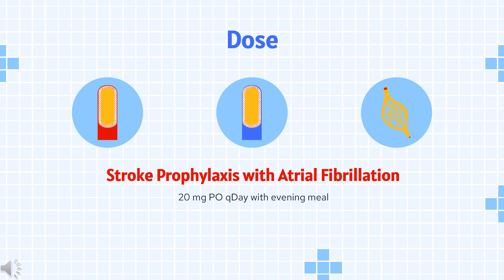Venous thromboembolism prophylaxis for restricted mobility: Indicated for prophylaxis of VTE and VTE-related death during hospitalization and at discharge in acutely ill patients at risk for thromboembolic complications due to moderate or severe restricted mobility and other risk factors for VTE, and not at high risk of bleeding. CRCL ≥15 mL/min: 10 mg orally once daily, in hospital and after hospital discharge, for 31 to 39 days. CRCL <15 mL/min: avoid use.